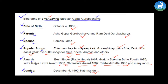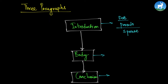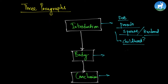Now I want you to write three paragraphs about Sur Samrat Narayan Gopal Guruvacharya. This is the usual thing about any kind of writing — it starts from introduction, goes to body, and ends with conclusion. In the introduction, talk about the person's date of birth, also talk about his or her parents, the name of the spouse if it is mentioned, and write about his or her childhood. Was it good? Was it happy or unhappy? Write about that.